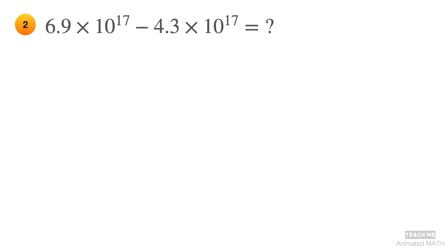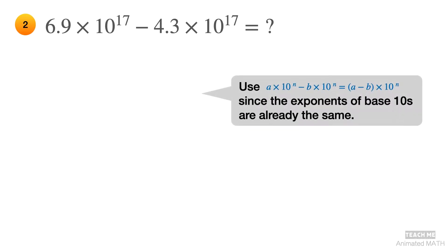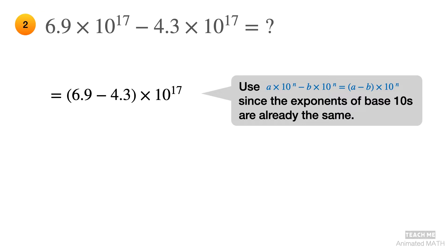This is another easy example since the exponent for the base 10 of both numbers are already the same, which is 17. You only have to solve 6.9 minus 4.3. The final answer is 2.6 times 10 to the 17th power.